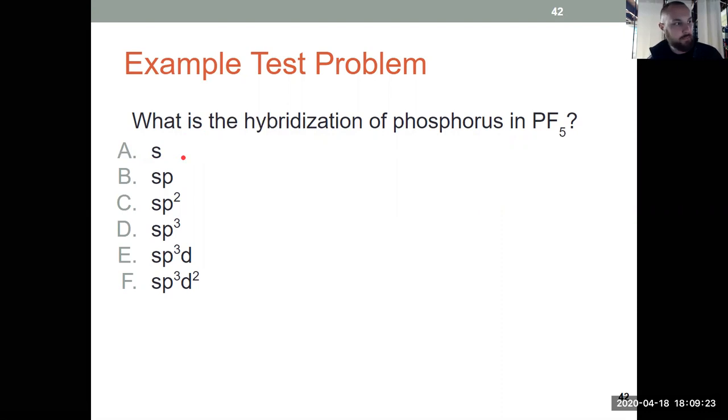The first thing you're going to cross off if you're tackling this problem is answer A. That's not a hybridization. These are the only possible answers for hybridization. So draw the Lewis structure, count the regions of electron density. For PF5, phosphorus doesn't have any lone pairs, but it's surrounded by five single bonds, all going to a fluorine. So in this situation, the answer is again, sp3d.